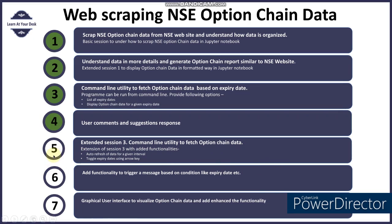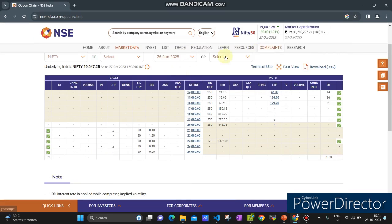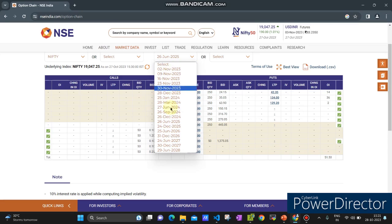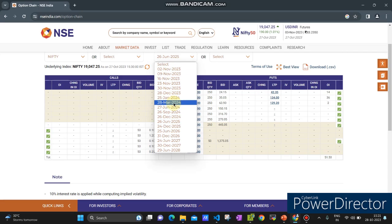Let us come to the agenda of this session. Here I'm going to discuss the fifth point, where I'm going to extend the previous functionality. The previous functionality was to fetch the option chain data for a given expiry date on a terminal console — every time we had to provide the date and then fetch the data. Now, since the option chain data has multiple expiry dates in a list, I've added functionality where you can press the up and down arrow keys to toggle the data and see it for different expiry dates on the same screen.